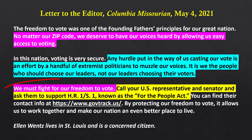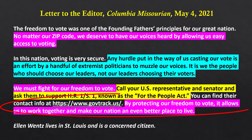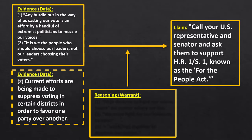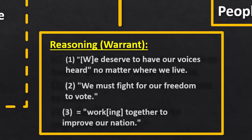Another premise: we must fight for our freedom to vote. That's a premise that is getting at this notion that our right to vote is being taken away — that's something that's provided in the evidence. The claim is asking us to do something that's going to get Congress to pass this act, so this might be something that mediates in between. And there's another reason why our action is relevant: by protecting our freedom to vote, it allows us to work together and makes our nation an even better place to live. So if we go back to our diagram, we've got our claim, we've got our evidence, and we can fill into the warrant box these three premises.